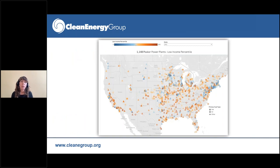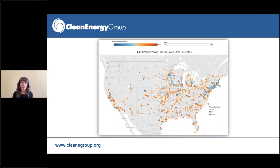Another critical aspect of peaker plants is that they are disproportionately located near low-income communities and communities of color. This map, from a tool on our website cleanenergygroup.org, shows the peaker fleet sorted by proximity to low-income communities — blue is higher income, orange to red is lower income. This map alone makes the disparity in our peaker fleet today very clear.